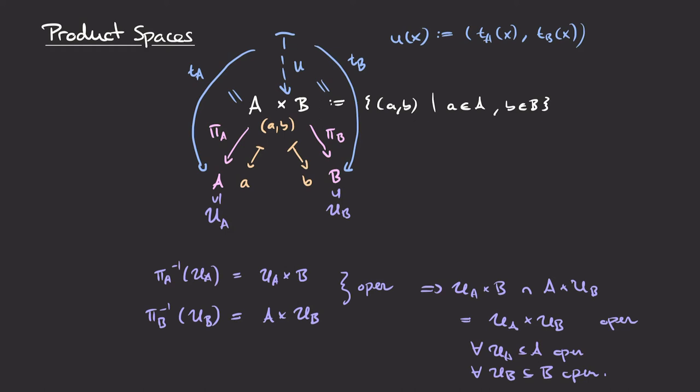We've found a necessary condition for continuity of the projections. If π_A and π_B are continuous then condition (★) holds. However, there may be many topologies satisfying (★), so we need to pick one out of this class to put on the Cartesian product. The question becomes: which topology satisfying (★) is the right one for our product space?